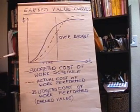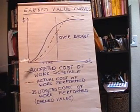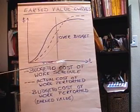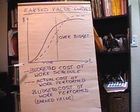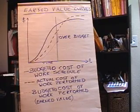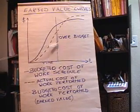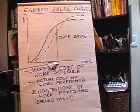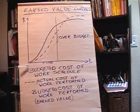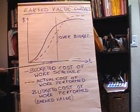Let's say that we're tracking a project over time. We've got time on the x-axis here. And let's say we've been looking at the cost of the activities in the project. This vertical line right here is today — that's now. This side is the past and this side is the future.